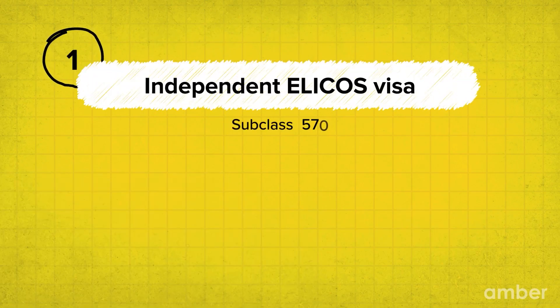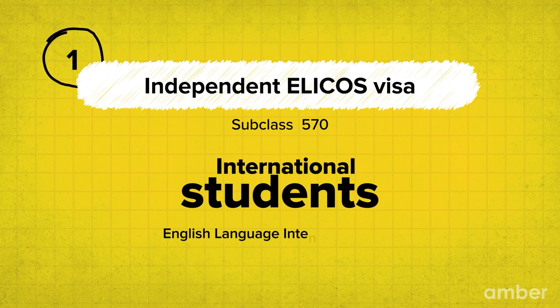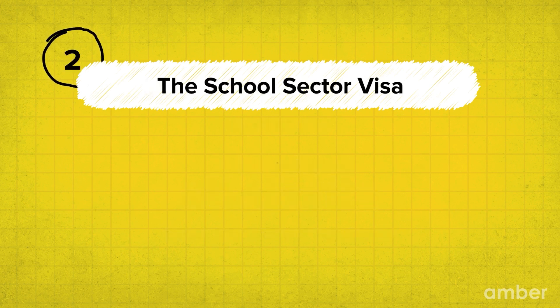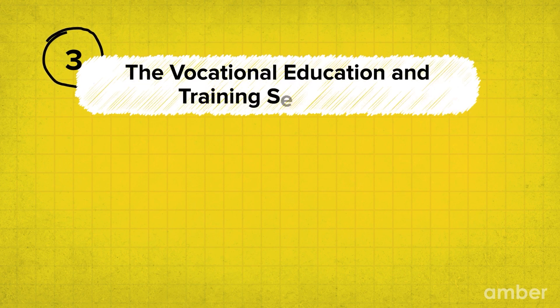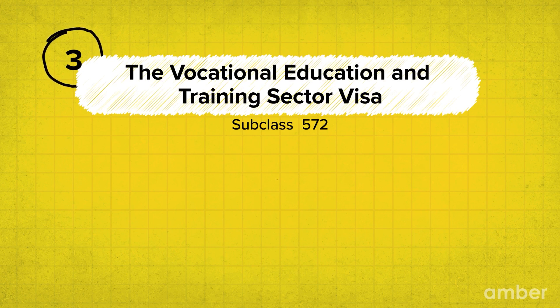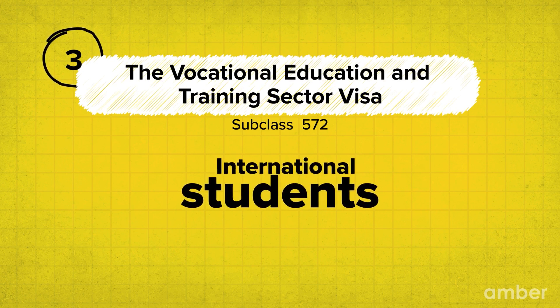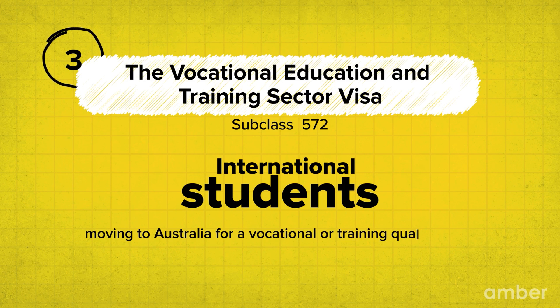The first is the Independent ELICOS course visa, subclass 570. This visa is for international students who wish to pursue an English language intensive course. The next is the School Sector visa, required for children who study in a primary or secondary school. The third category is the Vocational Education and Training Sector visa, subclass 572, required if you are an international student moving to Australia for a vocational or training qualification.